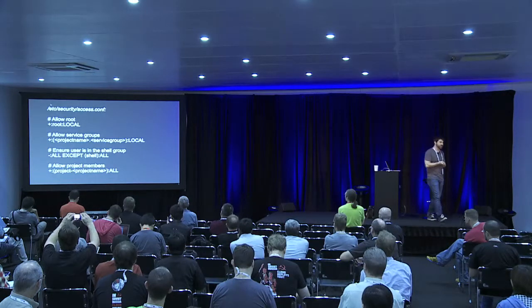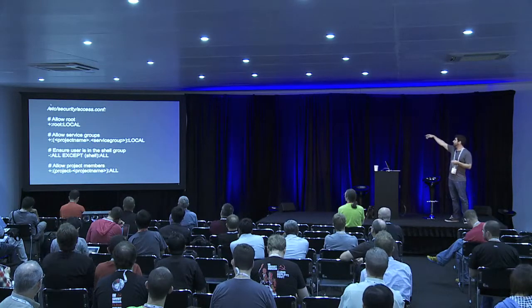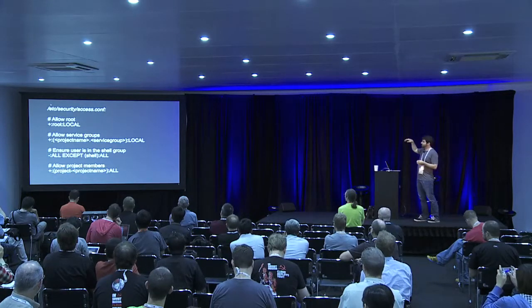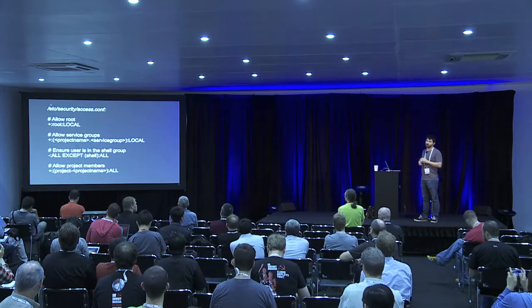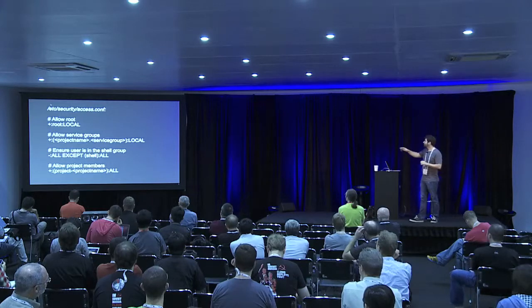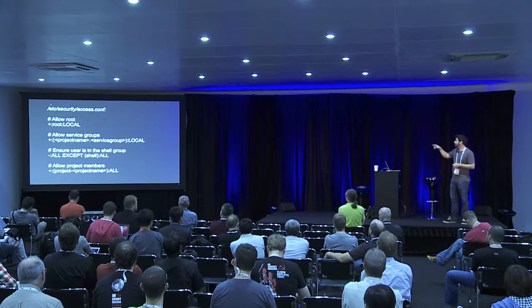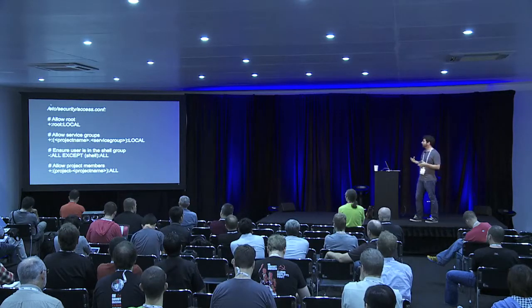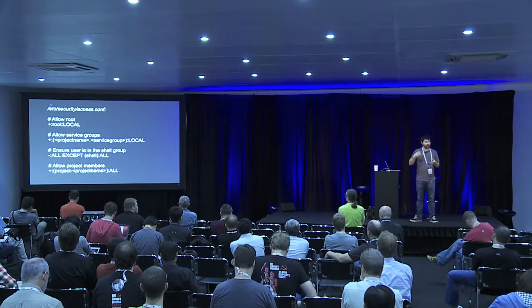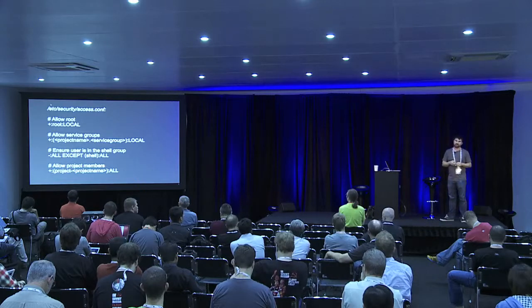We also use access.conf. One of the things we do is allow root for everything, because otherwise the system breaks. The next thing we do is allow the service groups to be available. We have a naming convention for the project groups. We ensure the user is in the shell group — if the user is not in the shell group, they get denied access. After that, we allow every project member. We're using the POSIX group that the user is a member of to allow or deny them access into that project. So if someone is not a member of a project, they can't SSH into the project.